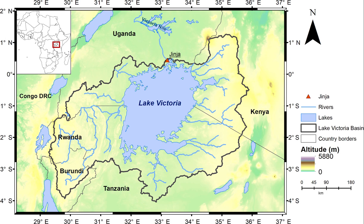Lake Victoria is drained only by the Nile, near Jinja, Uganda, on the northern shore of the lake.